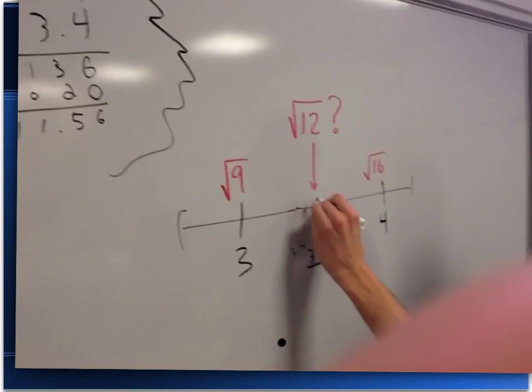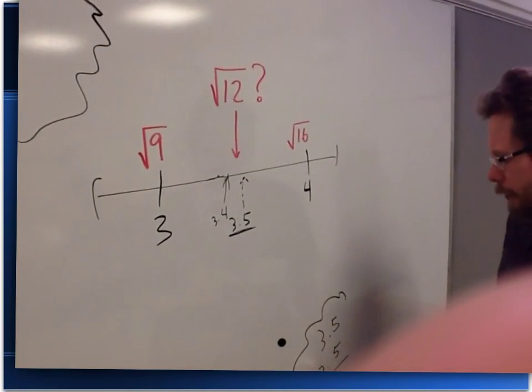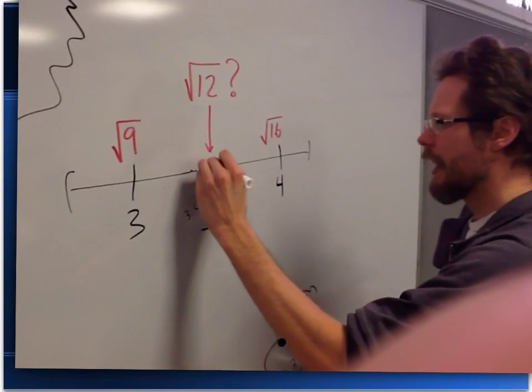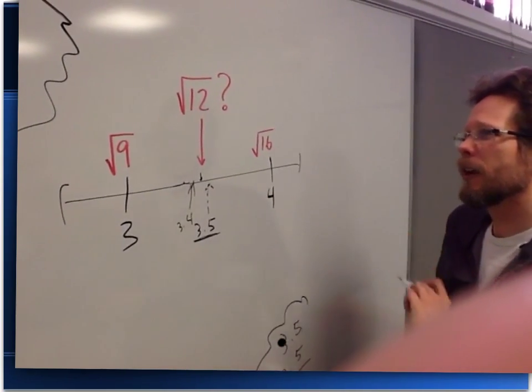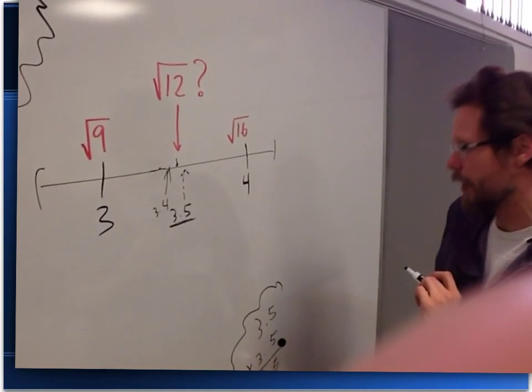It is falling somewhere between 3.4 and 3.5, and we could keep guessing halfway if we wanted to, and keep seeing which side it falls on. Or, we can make an educated guess and see which one we think it's closer to.